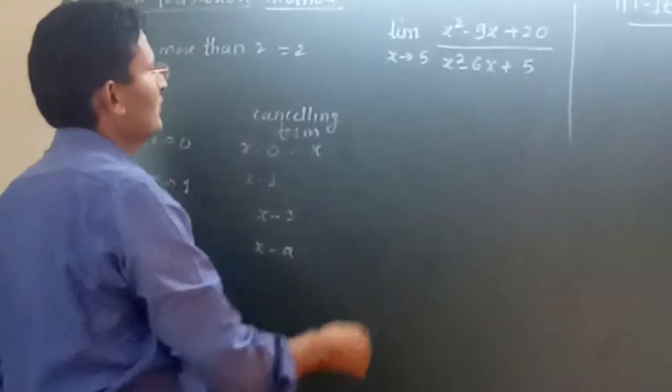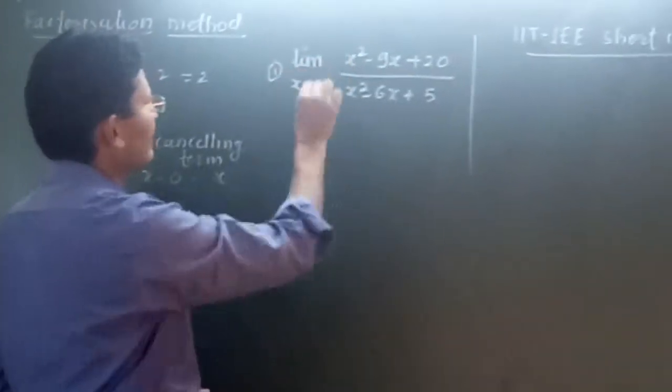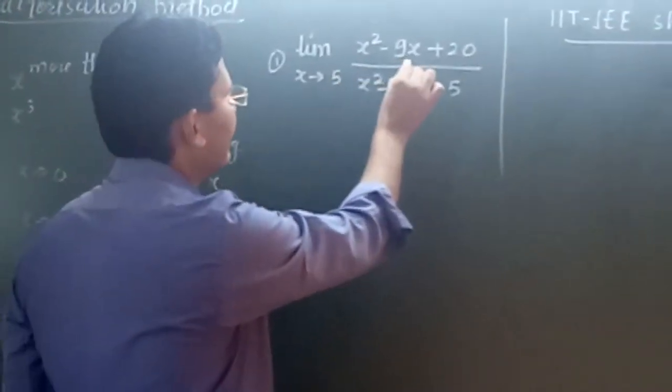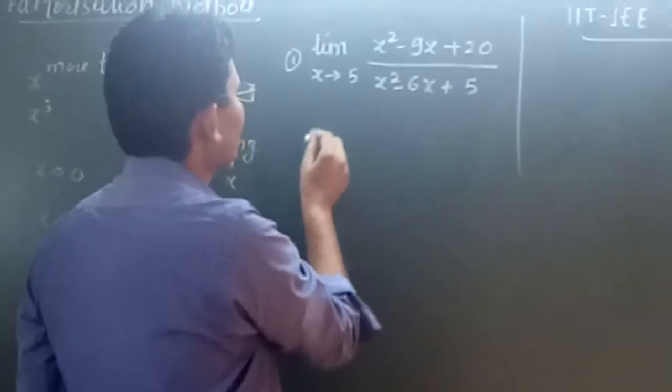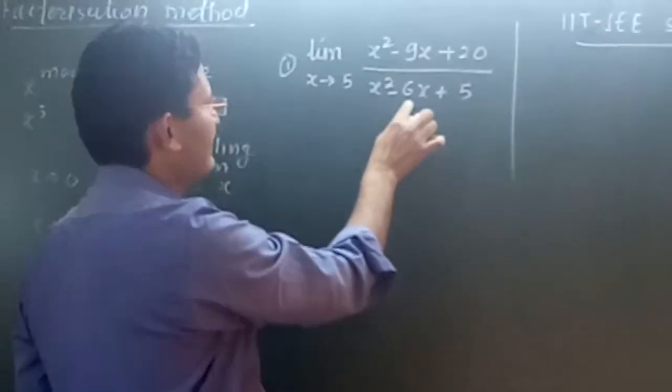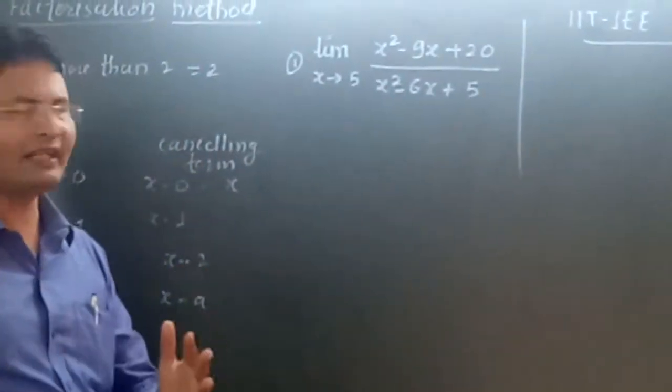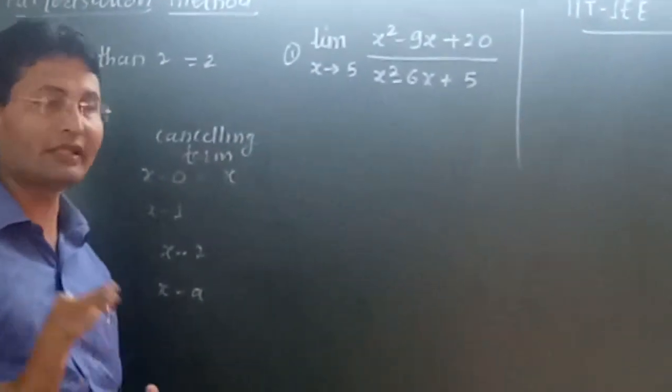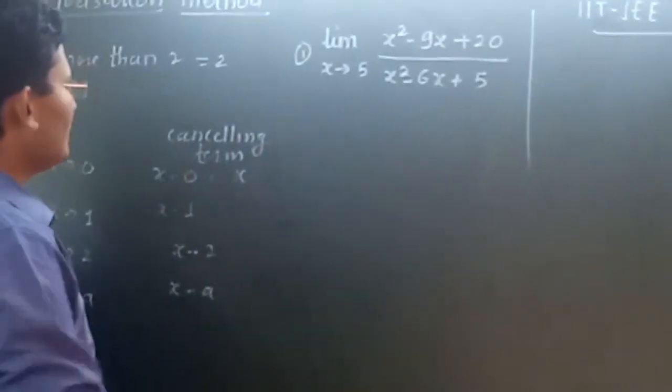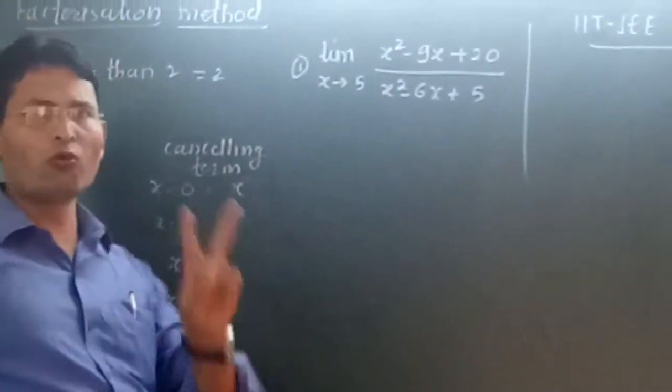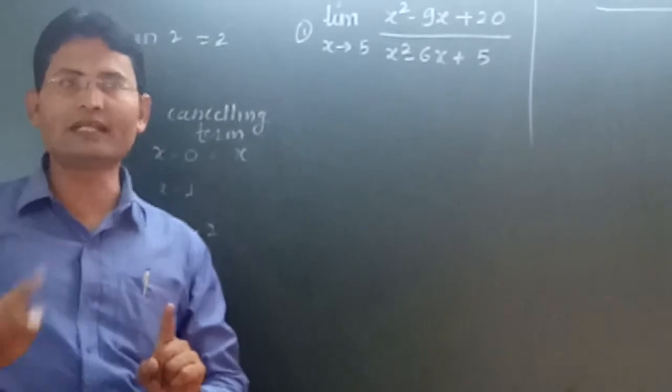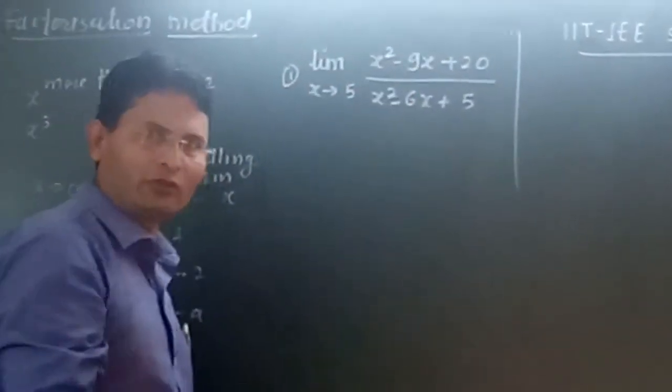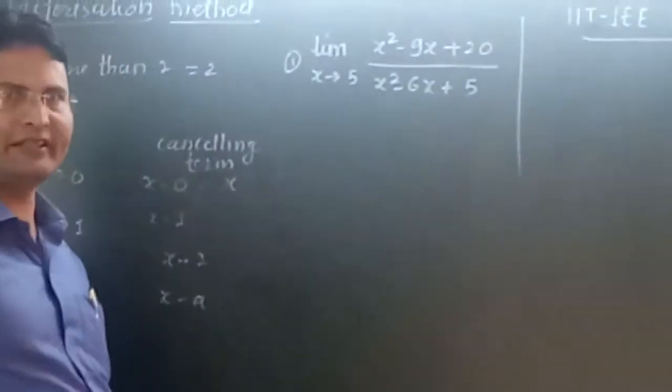Now we will study the very first sum. Limit x tends to 5, x square minus 9x plus 20 upon x square minus 6x plus 5. If x tends to 5, what would be the canceling term? The canceling term would be x minus 5. So while considering, one term has been decided, that is x minus 5. x to the power 2 means we can factorize to get the canceling term.